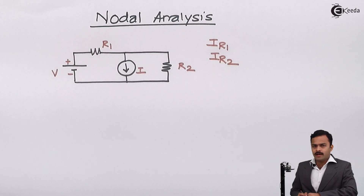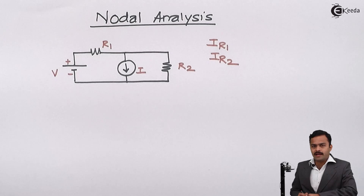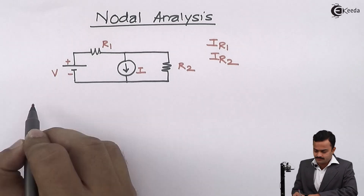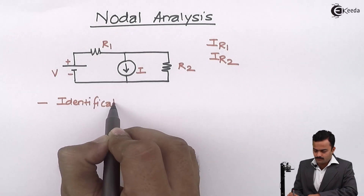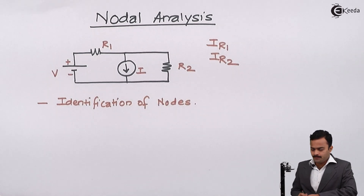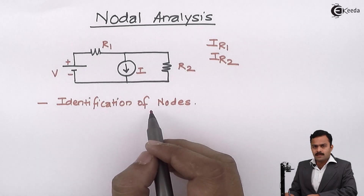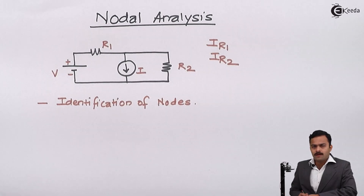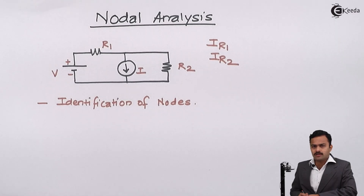One thing very important in nodal analysis is to identify how many nodes are there. For nodal analysis, to solve a problem, a node means a point where more than two branches are connected. A node is a point or a junction where more than two branches are connected.